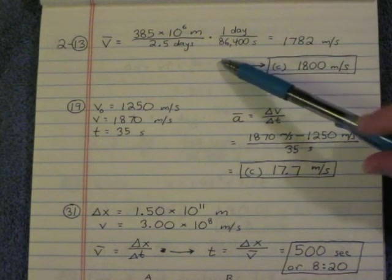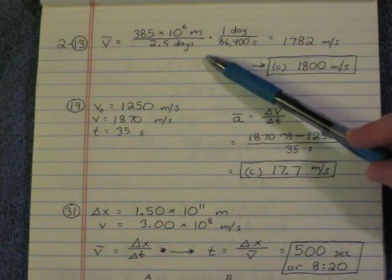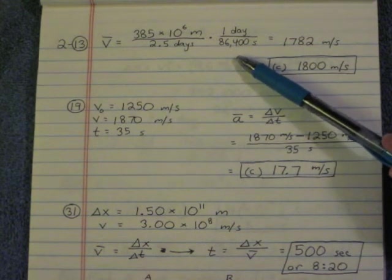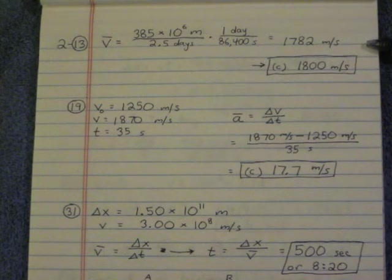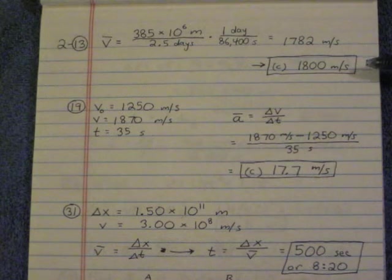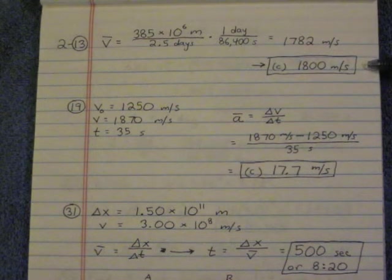since it was times 10 to the third kilometers, that's going to be times 10 to the sixth meters, divide by 2.5 days. Let's convert one day over 86,400 seconds, and that gives us 1,782 meters per second. The answer rounded to two significant figures is 1,800 meters per second.